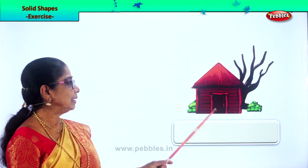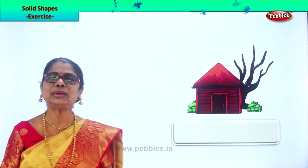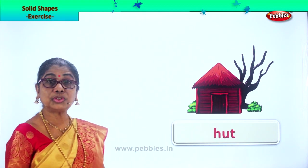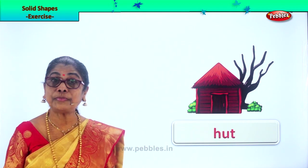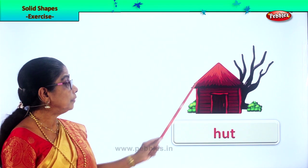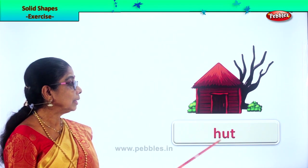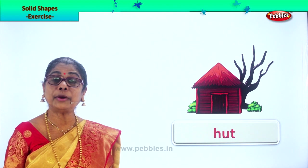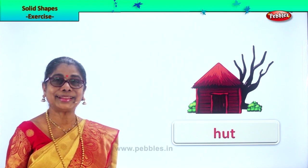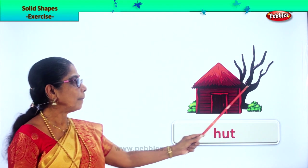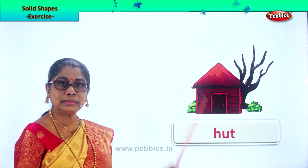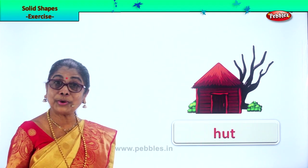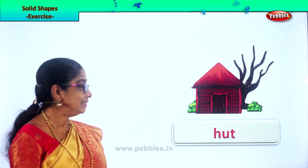Let's look at this hut. Look at the top of the hut — the top of the hut is also a shape of a cone. And what about your pencil top? Your pencil is also the shape of a cone.